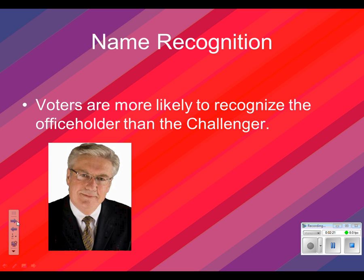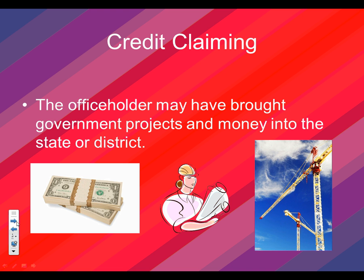Randy Hultgren was in Congress, so obviously he had more name recognition. If you notice, most of the signs you see on the side of the road will literally say the person's name and 'for Congress' next to it, because they're just trying to get name recognition. One candidate came in our class once and said that each bumper sticker is worth eight votes, so they're just trying to get their name out and have people vote for them.